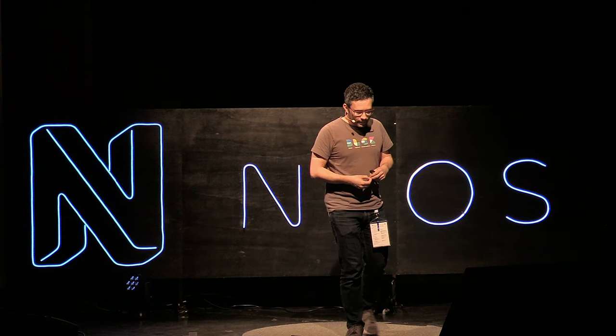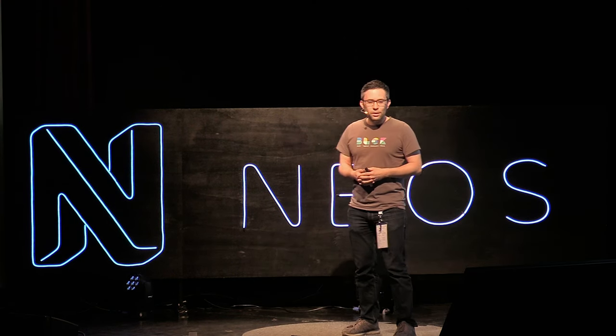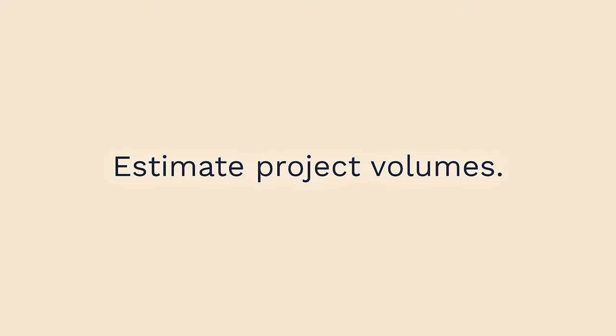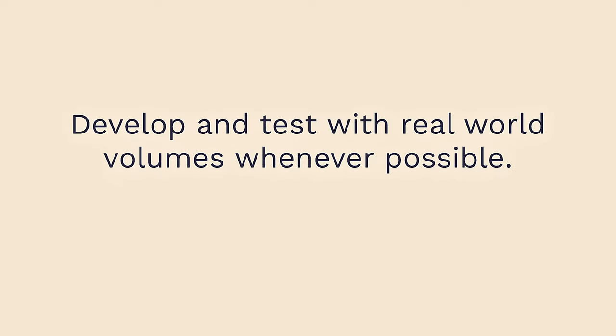And then we have data. When we start a new project, we try to estimate project volumes in terms of data and traffic. The important thing is not to overestimate. Don't try to build a system that can handle the traffic and data of Facebook because that clearly won't fit into your customer's budget. Come up with an architecture that fits the customer's needs and is also able to scale when those needs grow.